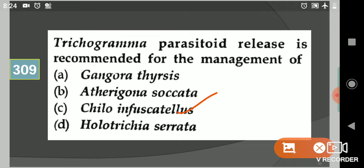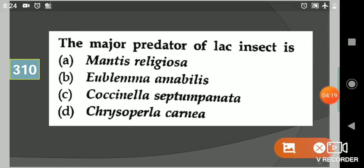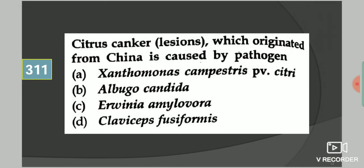Come to the next question: The major predator of lark insect is? Your options are Mantis religiosa, Ublema amabilis, Coccinella septempunctata, or Chrysoperla carnea. Your answer is second option, Ublema amabilis.